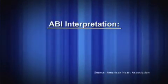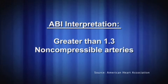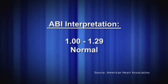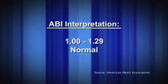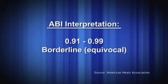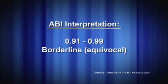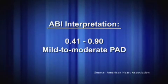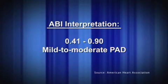The American Heart Association gives the following ABI interpretation levels. Above 1.3, you will need to pay close attention to the Doppler waveforms and obtain toe pressures. 1.00 to 1.29: these patients may still be within normal limits, but an exercise test may uncover a low degree of obstruction that is difficult to document with a resting test only. 0.41 to 0.90: these patients will certainly experience intermittent claudication when they walk or exercise due to a drop in their ankle pressures.